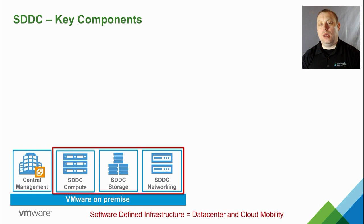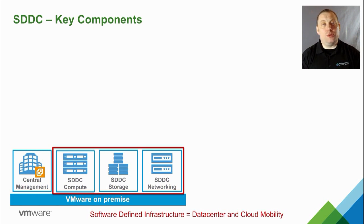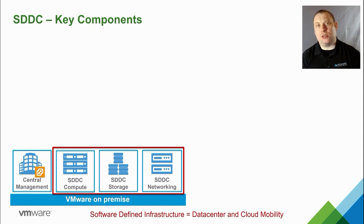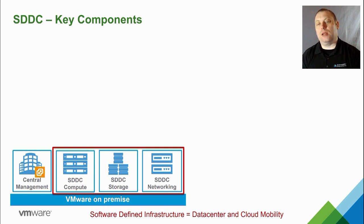I tend to think about this red box as software-defined infrastructure, which gives you data center and cloud mobility. If you've got all three components, you can move things to another data center or cloud provider without worrying about the implications. When talking to customers into DevOps or cloud-native applications, I'll sometimes call it infrastructure as code — it's the same concept, just different terminology. For traditional customers I call it software-defined infrastructure; for DevOps-oriented customers, infrastructure as code resonates more.